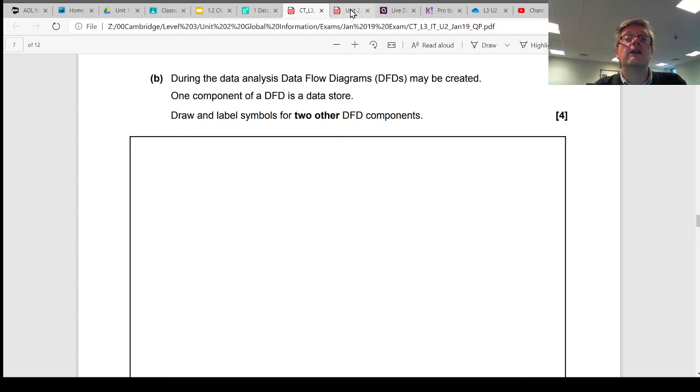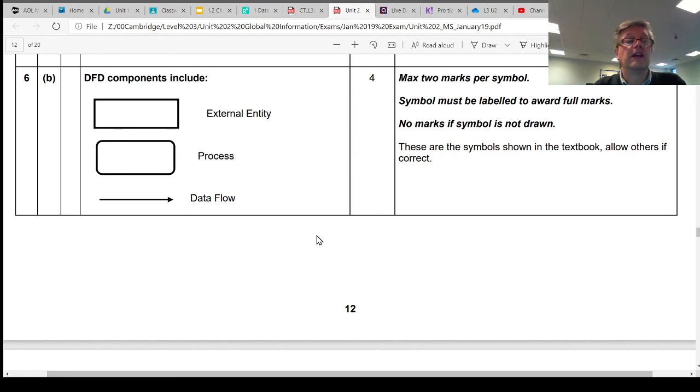If we know what the symbols are, and if we know what they mean, then we can just pick two of the other three symbols that are used in DFD diagrams. So you get two marks per symbol. You get one mark for drawing it, and you get one mark for saying what it is. If you did not draw it because you are unfamiliar, or you can't remember the shapes or the symbols, then you're going to immediately drop two marks on this question. It tells us here that these symbols are shown in the textbook, but they are also aware that there are other alternative symbols, and if you've used those, then they're also correct.